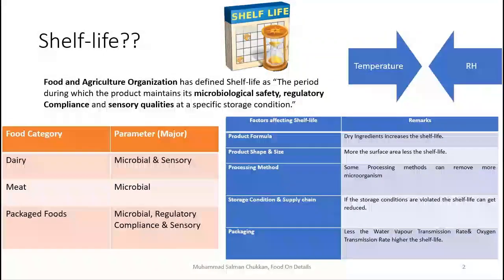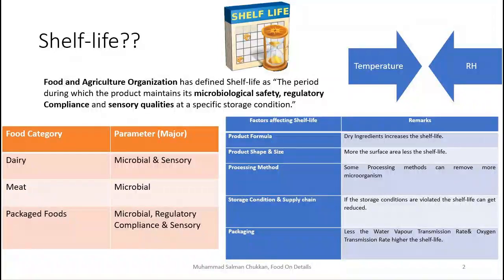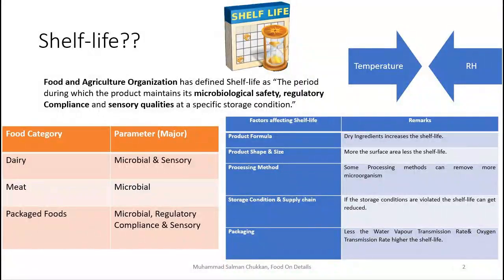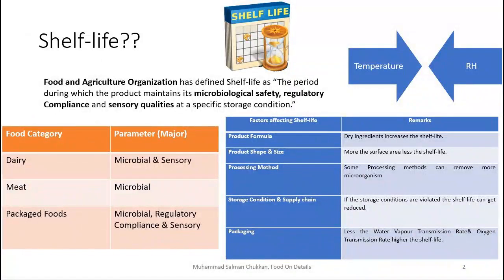On the right-hand side of the slide, there is a table which explains the factors affecting shelf life. Two major factors are worth highlighting. First, product formula — a recipe with more dry ingredients will have a higher shelf life. Second, product shape and size — it is to be noted that the greater the surface area, the lower the shelf life.